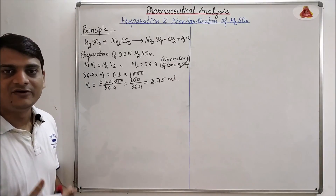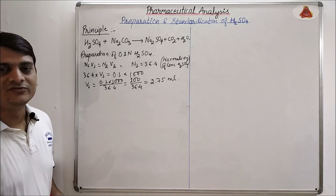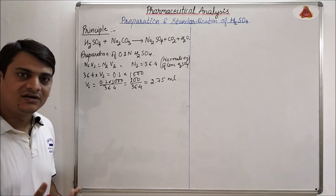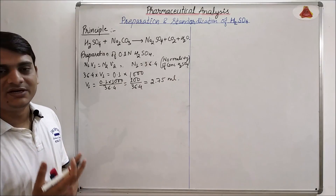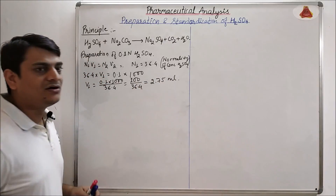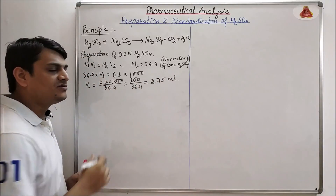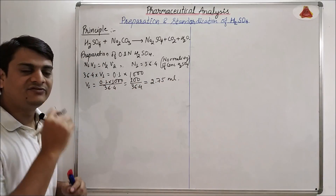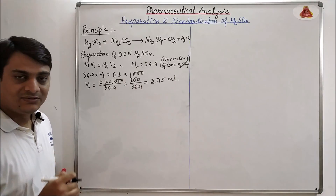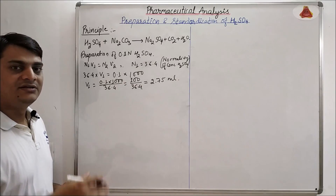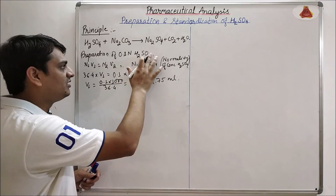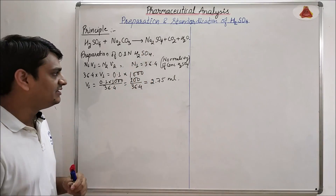For preparation of 0.1 normal H2SO4, first take 100 to 200 ml of distilled water in a volumetric flask, then add 2.75 ml of concentrated H2SO4 dropwise into the volumetric flask, and finally make up the volume to 1000 ml. The produced solution will be 0.1 normal with a final volume of 1 liter.